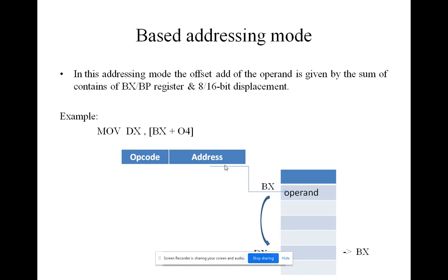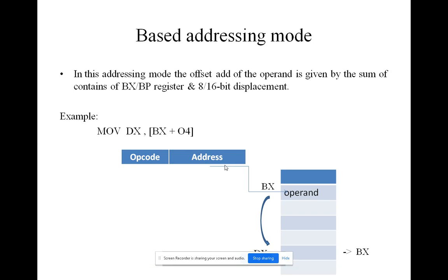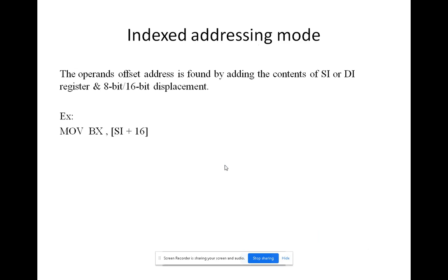Next, index addressing mode: in this addressing mode, the offset address of the operand is given by the sum of the contents of the BX or BP register and an 8-bit or 16-bit displacement. For example, MOV AX, [BX+4] — here, 4 represents the displacement, which is added to the BX register to give the memory location, and that data is moved to the AX register.